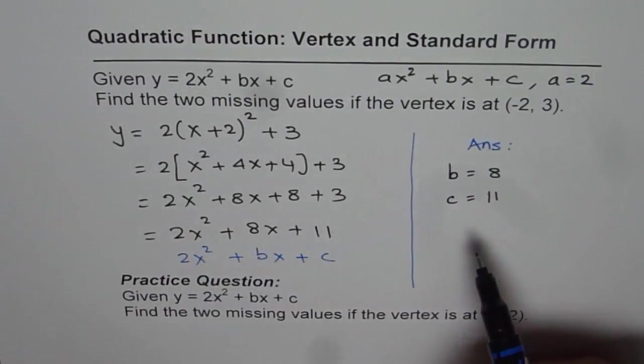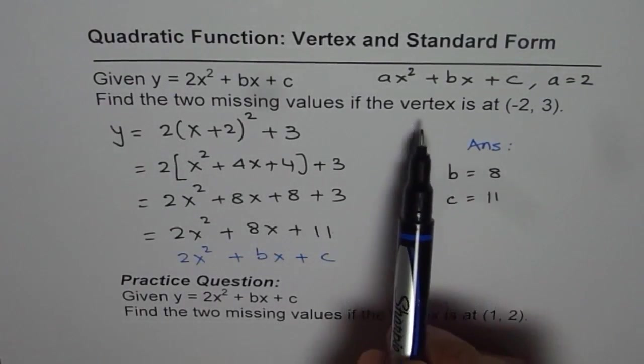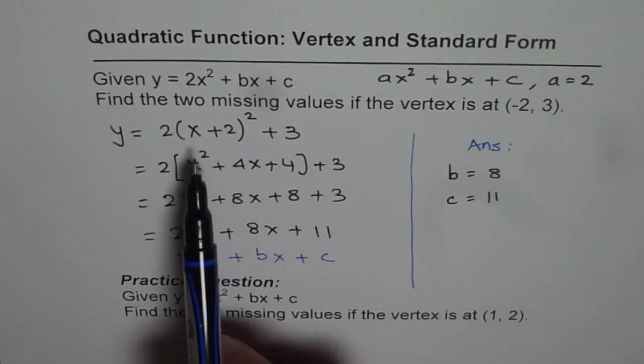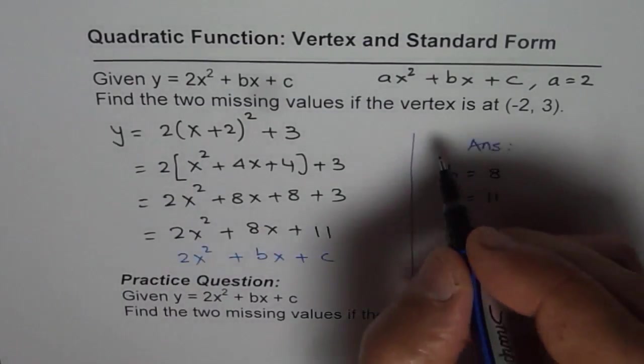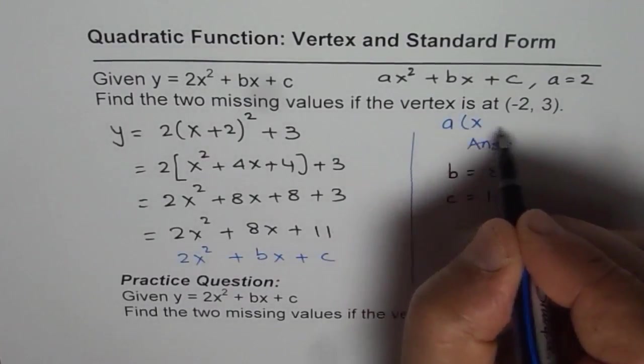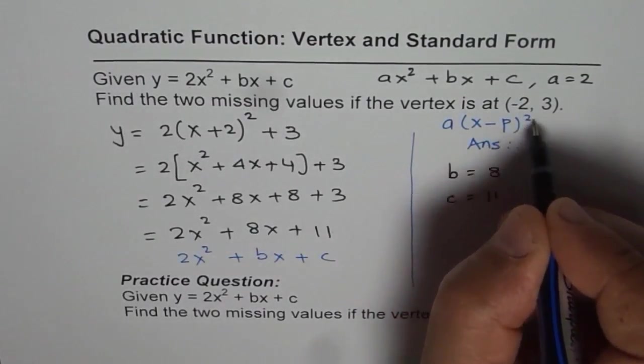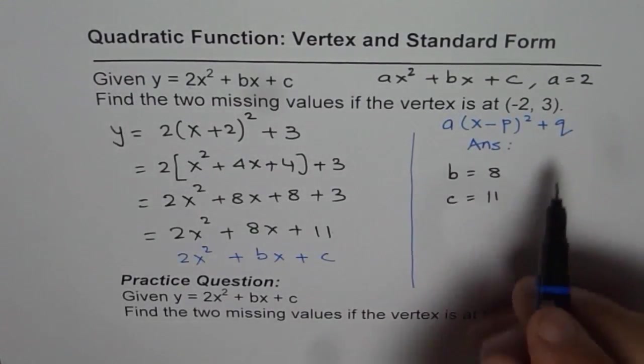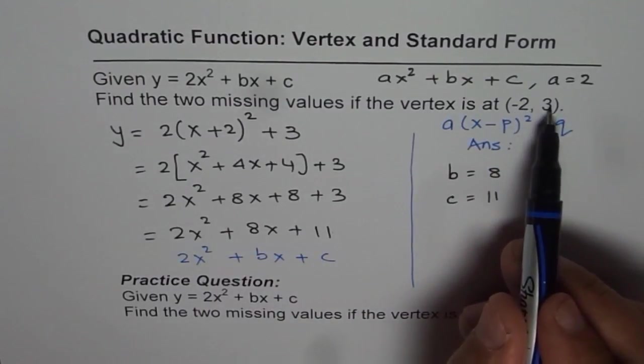I hope you appreciate the method. The idea is when you are given a vertex, you can write the equation in the vertex form. So generally it will be a times (x - p)² plus q.